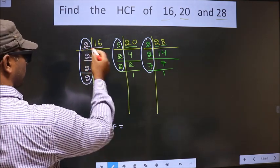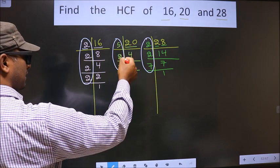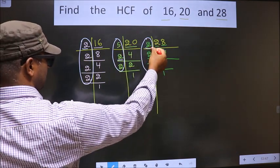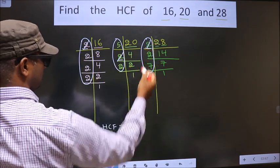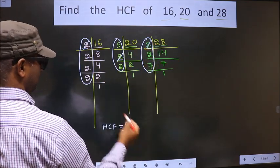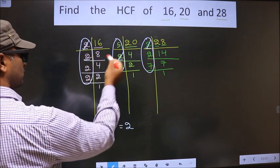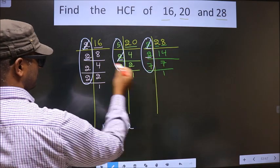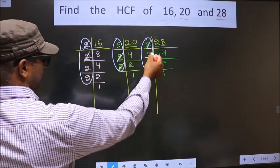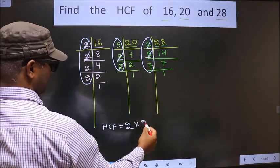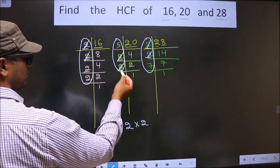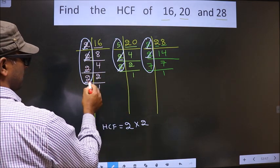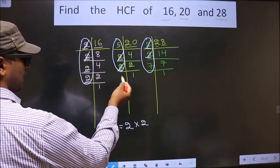Starting with the number 2. Do we have 2 here? Yes. Next place. Do we have 2 here? Yes. So you cut 2 and write here. Next number is 2. Do we have 2 here? Yes. Next place. Do we have 2 here? Yes. So you cut 2 and write here. Next number is 2. Do we have 2 here? No. No need to check in the other place. Next number is 2. Do we have 2 here? No.